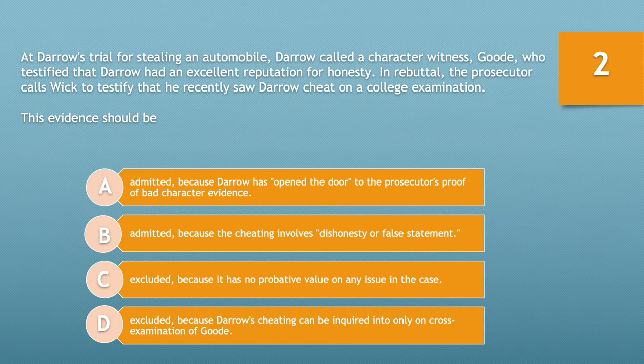The evidence should be: A, admitted because Darrow has opened the door to the prosecutor's proof of bad character evidence. B, admitted because the cheating involves dishonesty or false statement. C, excluded because it has no probative value on any issue in the case. Or D, excluded because Darrow's cheating can be inquired into only on cross-examination of Good. Take 10 seconds and choose the best answer now.